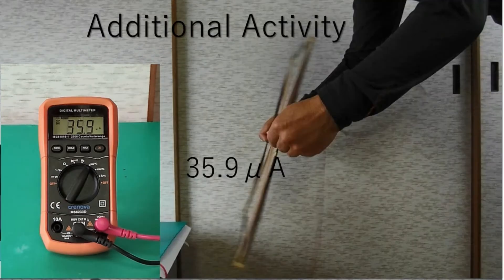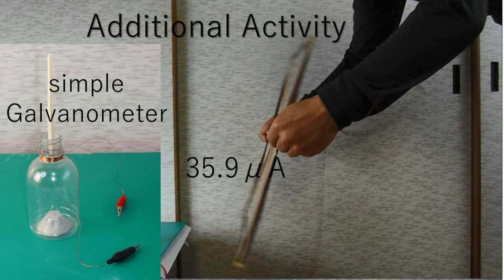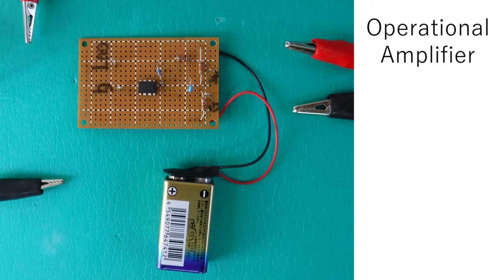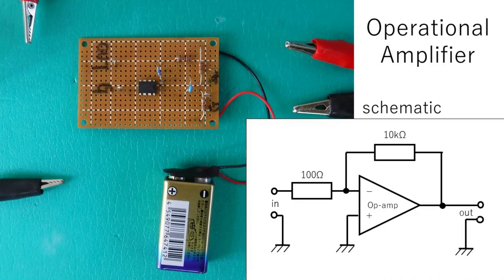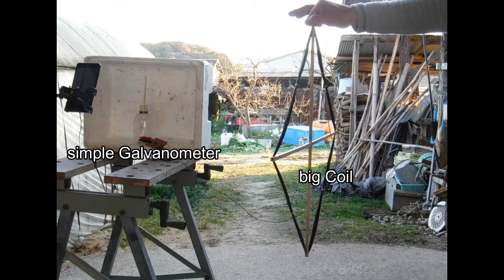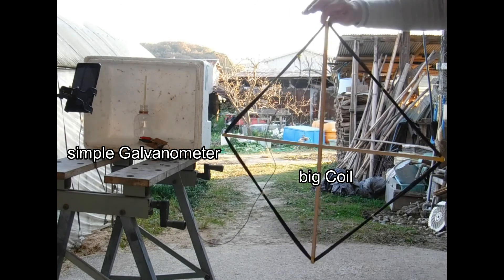Additional activity: this current is too small to work a simple galvanometer. This is an operational amplifier and its circuit schematic. Connect an operational amplifier to amplify the current. Let's try.